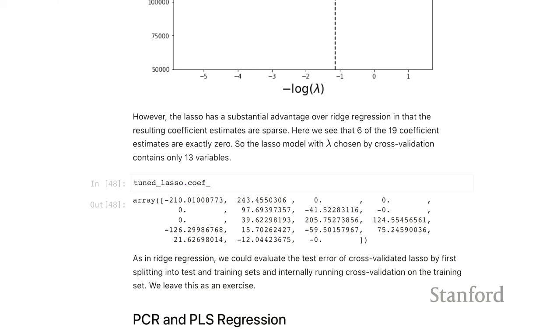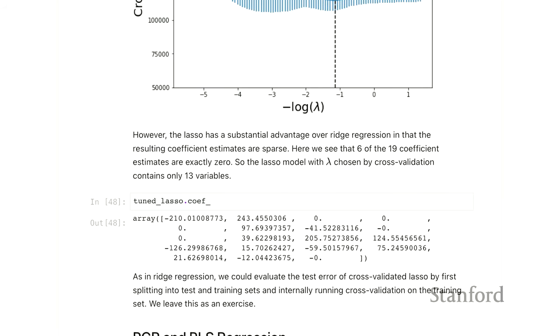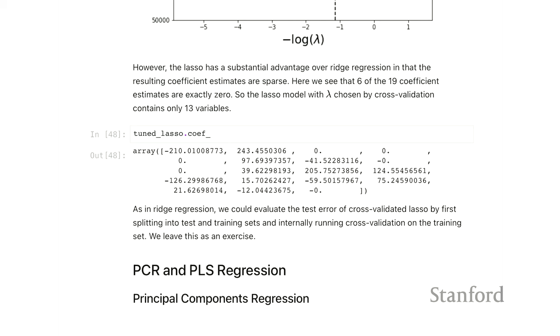Okay. So that wraps up the lab for chapter six, for what we'll talk about today. There is an additional section on principal components regression and partial least squares regression that we encourage you to do offline.